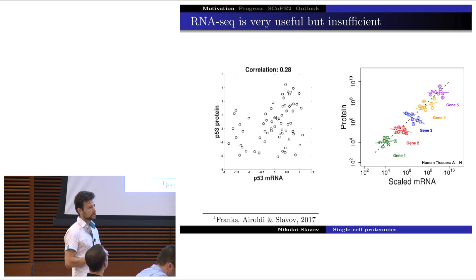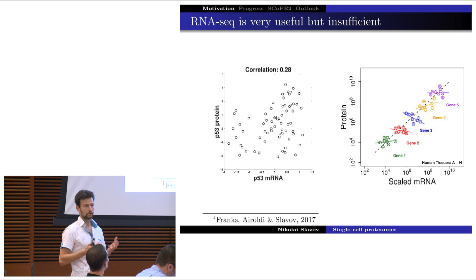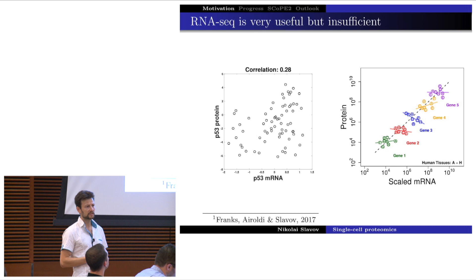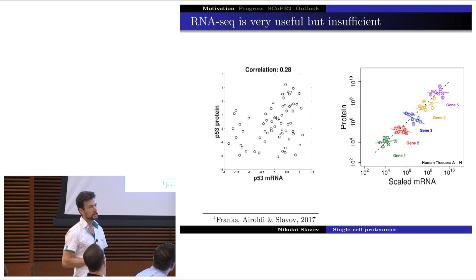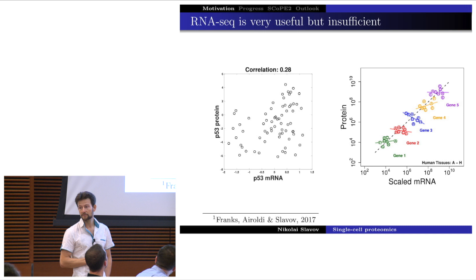RNA abundances are quite good at predicting which proteins are abundant — RNA levels are very high for ribosomal proteins or histones, and low for lowly abundant proteins. But if you want to know how a particular protein changes across different cell types, their predictive power is much lower. This phenomenon, where you have one type of statistical dependence within the whole dataset and a very different type within a subset, is known in statistics as Simpson's paradox. RNA measurements are also very noisy — something I'll say more about shortly.